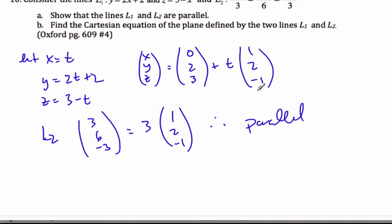And now in B part, it says find the Cartesian equation of the plane for these two lines are parallel. Well, if I have a line here L1.